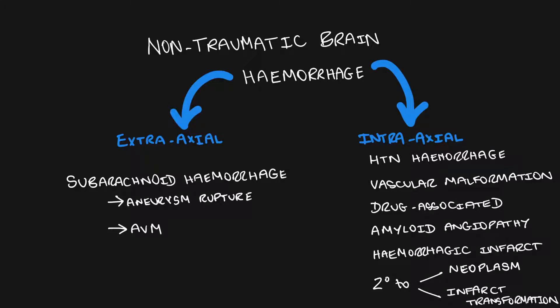In this video we are going to cover non-traumatic brain haemorrhage. This can be categorised into extra-axial bleeds and intra-axial bleeds. Subarachnoid haemorrhages are the most common type of extra-axial non-traumatic brain haemorrhage, usually due to rupture of an aneurysm but can also happen due to bleeding from an AVM.